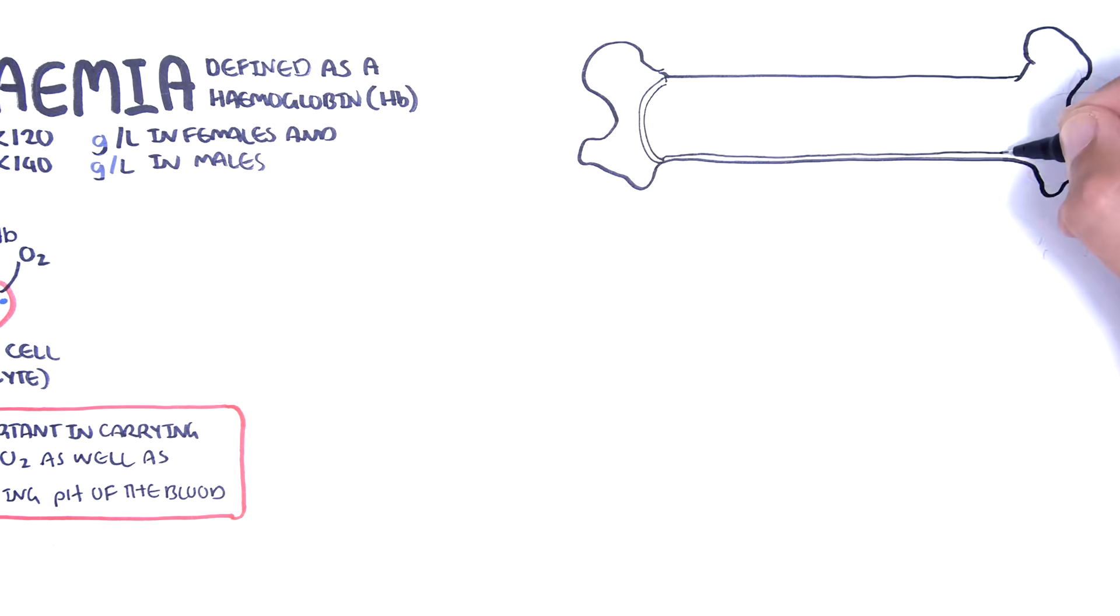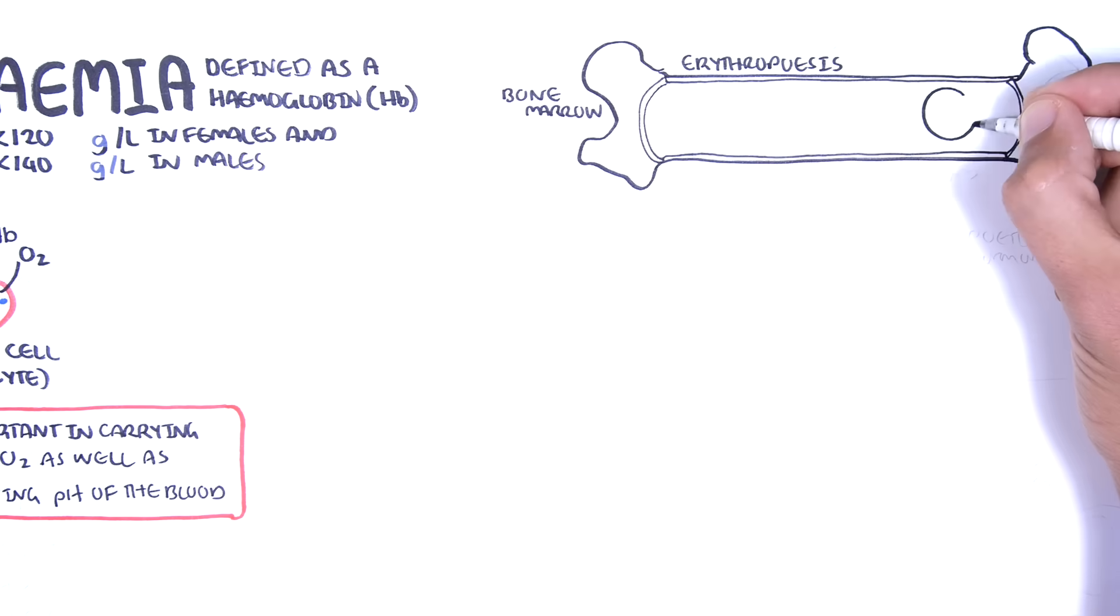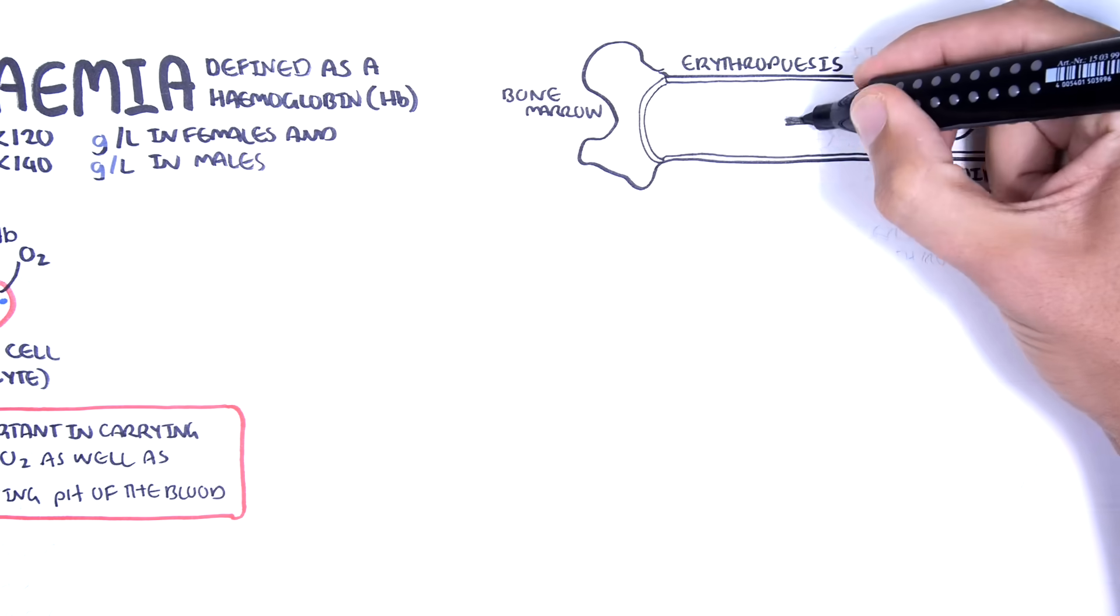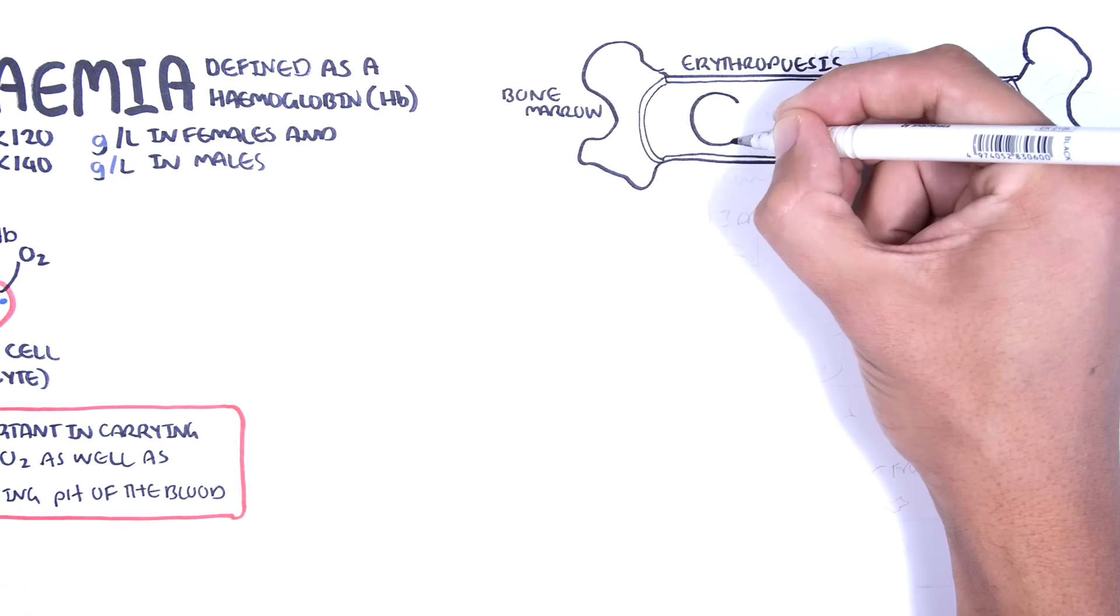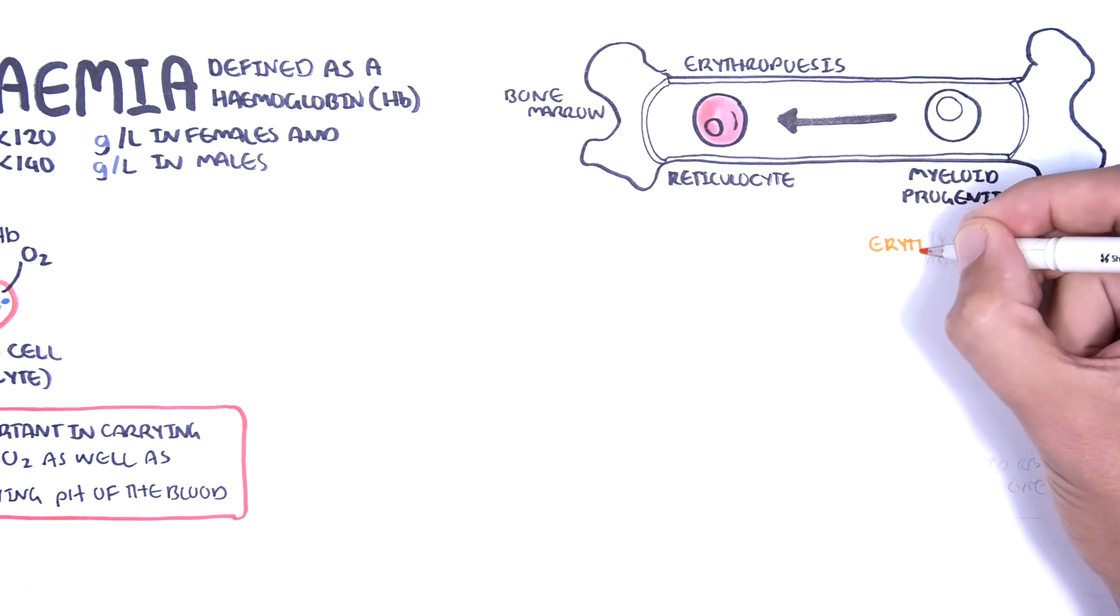Red blood cells arise from myeloid progenitor cells in the bone marrow. Erythropoiesis is the process of erythrocyte production. Myeloid progenitor cells become reticulocytes first, and this path is stimulated by hormones including erythropoietin.